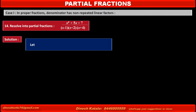Let the given fraction be x squared plus 6x plus 7 upon (x minus 1)(x plus 2)(x plus 4), where the denominator has three factors: x minus 1, x plus 2, and x plus 4. By taking three separate numerators A, B, and C, the right hand side becomes A upon (x minus 1) plus B upon (x plus 2) plus C upon (x plus 4).